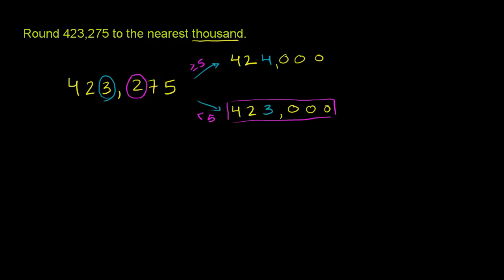Now, just to visualize what this means to the nearest thousand, if I were to do a number line—and you don't have to do this, we've gotten the answer—but just to have a little bit better visualization of it, if I were to increment by thousands, you might have 422,000, 423,000.